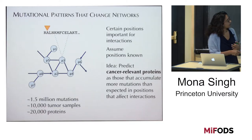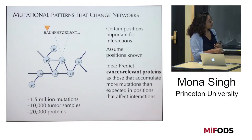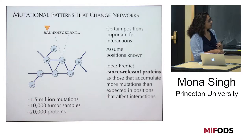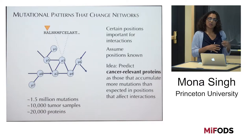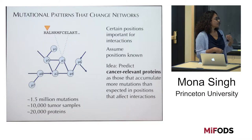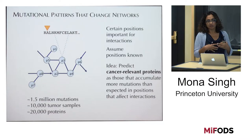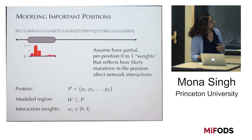So even if a protein doesn't have that many mutations overall across tumor samples, if it has more mutations in positions that affect interactions, that's evidence that there's a functional change going on. The analysis I'm going to describe — which we call PERTINENT — we'll do per protein, across roughly 20,000 proteins in human, looking across 10,000 tumor samples with a total of 1.5 million mutations. Issues that come up include modeling choices but also scale and getting things to run fast enough.